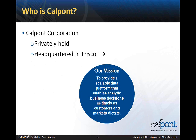But first, a word from our sponsors. CalPont is a privately-held company headquartered in Frisco, Texas. In truly distributed fashion, we have sales and marketing staff in various locations around the country, including the San Francisco Bay Area, Portland, Oregon, Denver, Colorado, and Boston, Massachusetts. Our mission is to provide a scalable data platform that enables analytic business decisions as timely as customers and markets dictate.